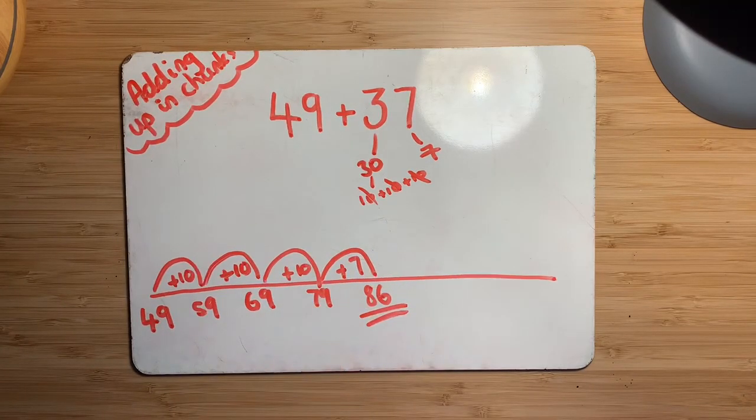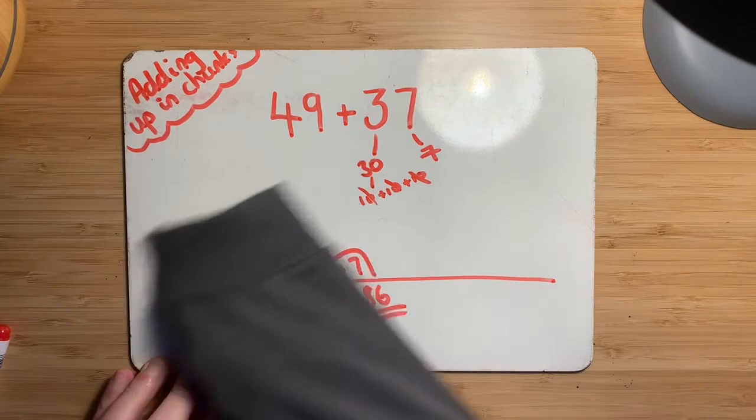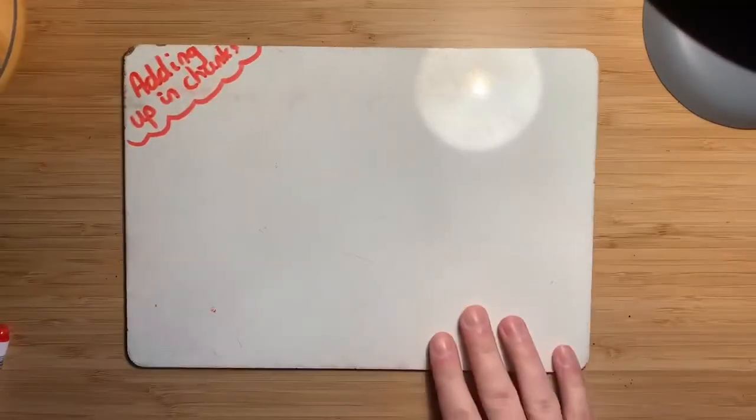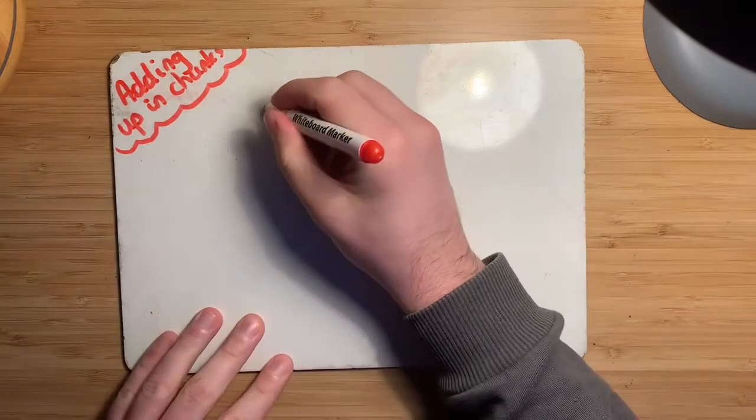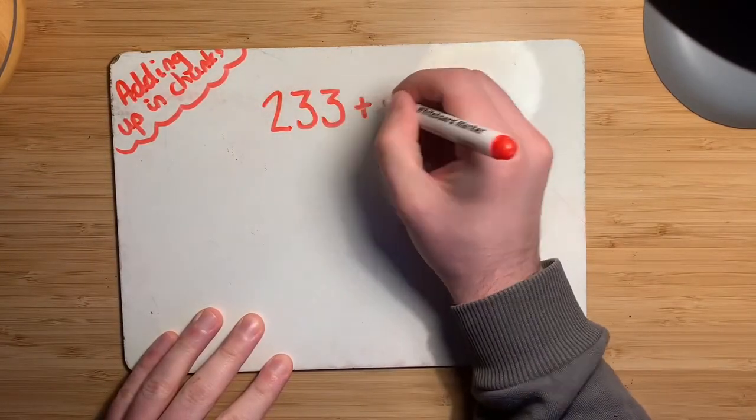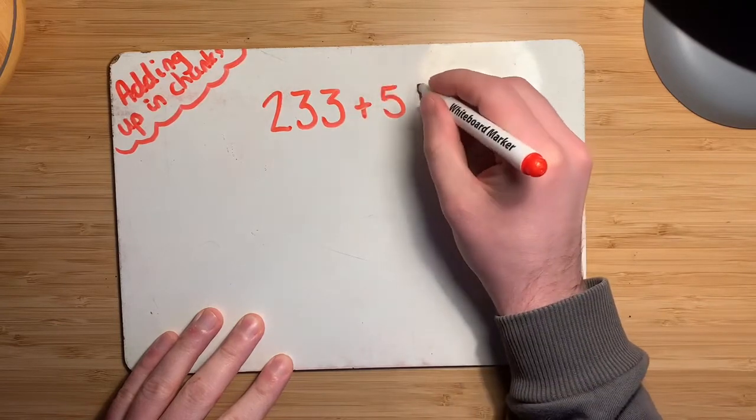The strategy is the exact same regardless of the numbers you're using. So it could be something much bigger than that as well. So we'll do a really quick example of how that would work with bigger numbers too. So let's say for example, your number was 233 plus, let's make it, let's just make it up randomly, 565.